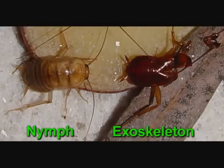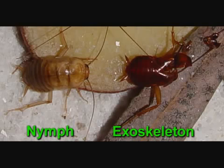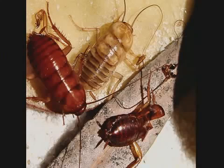Insects must molt in order to grow. Molting is the process where an insect sheds its outer skeleton. The insect emerges from the old skin, and a new, larger exoskeleton develops.